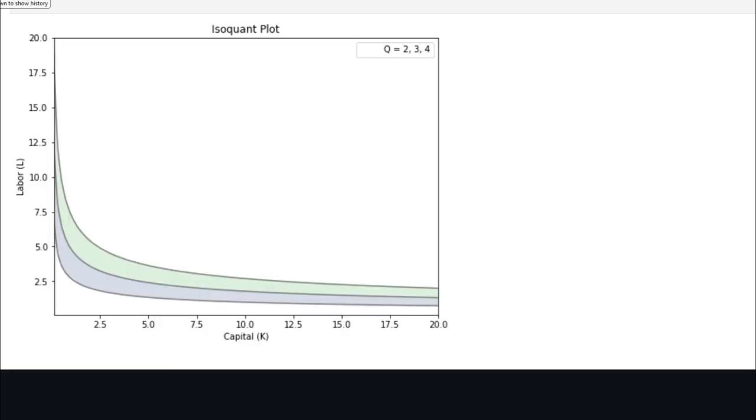This graph shows an isoquant plot, which represents all the different combinations of K and L that produce a given level of output. In this case, the isoquant lines represent different levels of output with contour levels of Q equals 2, 3, and 4.